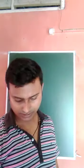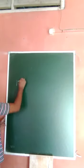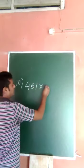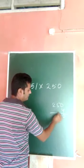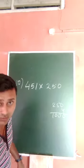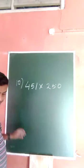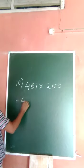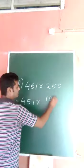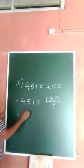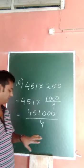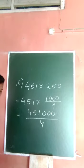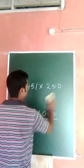So now the last one is 451 into 250. 250 by 4 you will get 1000. That means you can write 1000 divided by 4. So 451 into 250 means 1000 divided by 4, so we just do the division here.